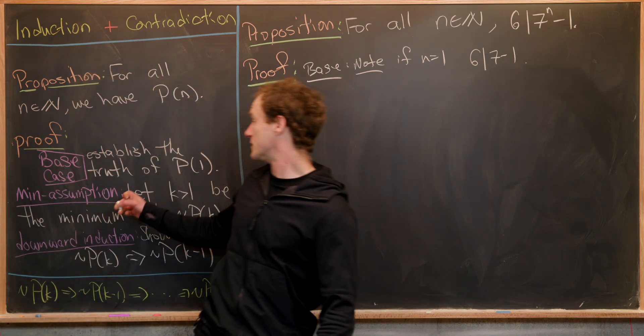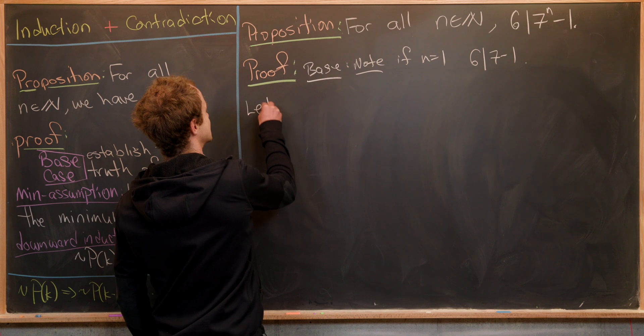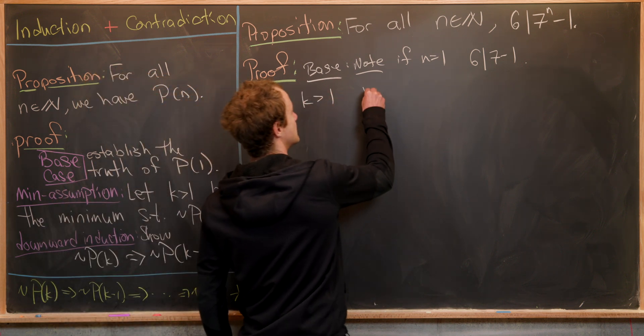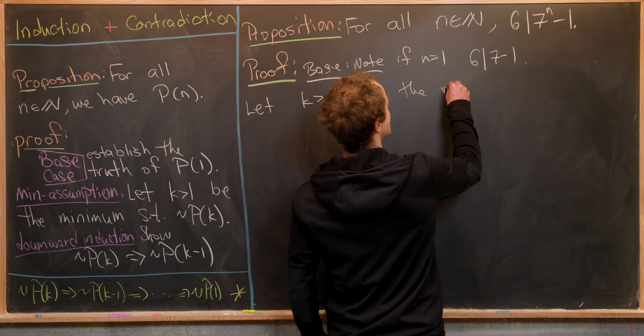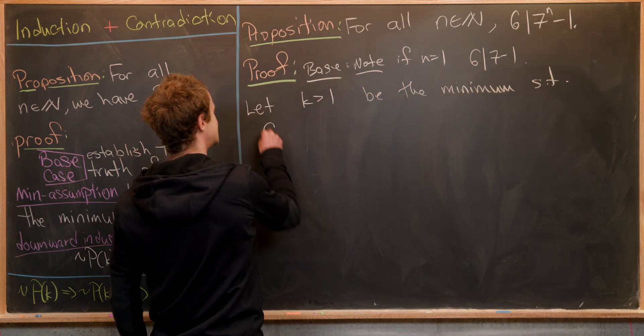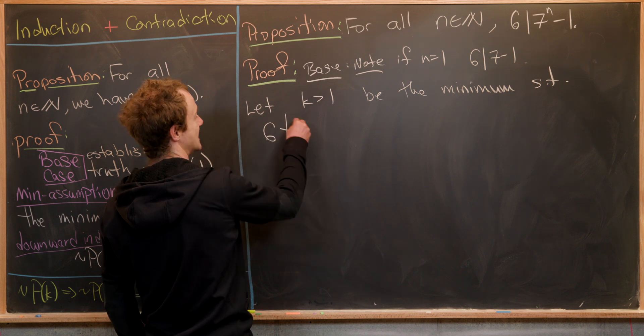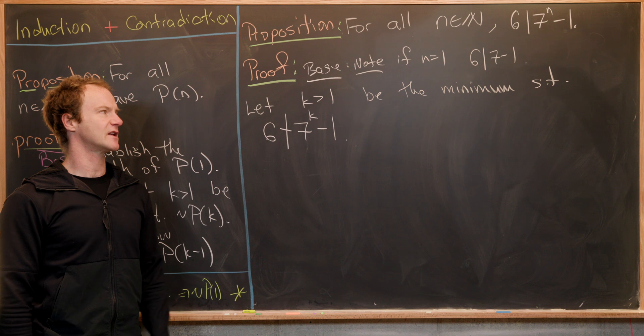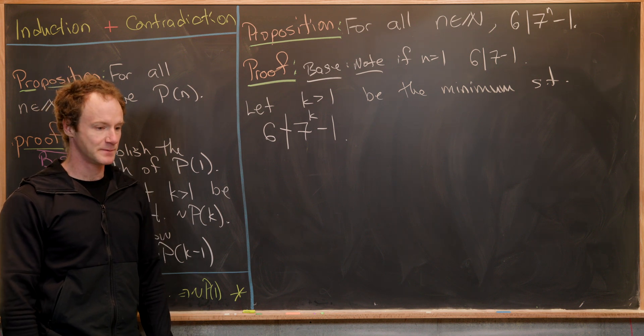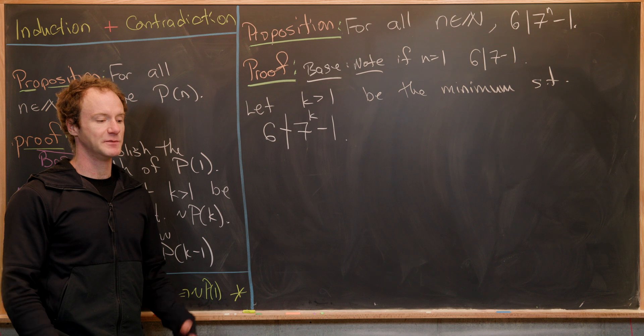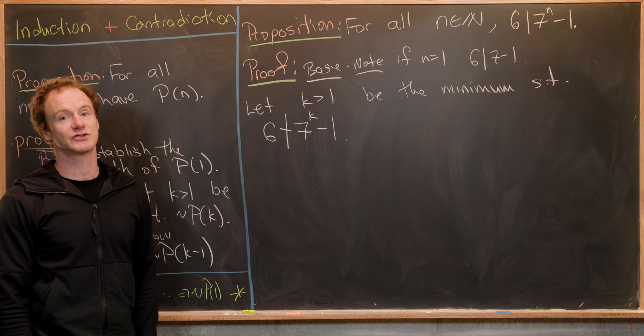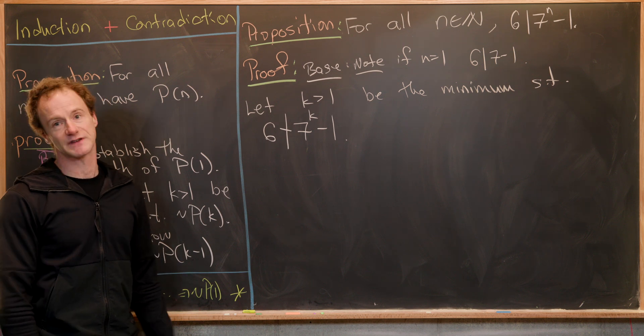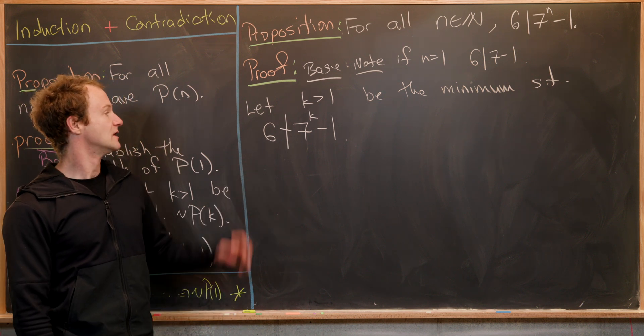Now we're going to do this minimality assumption. Let k, which is a natural number bigger than one, be the minimum such that six does not divide seven to the k minus one. Why should there be a minimum? Because we're assuming this is a non-empty set of natural numbers. By the well-ordering principle, every non-empty set of natural numbers has a minimum element.